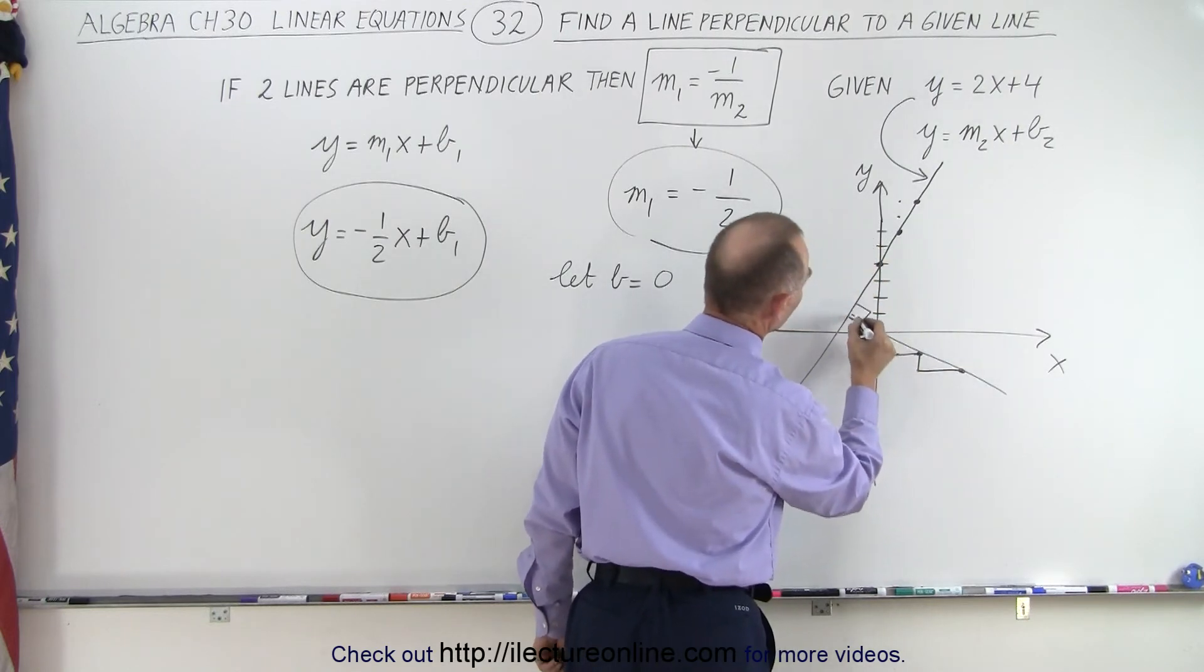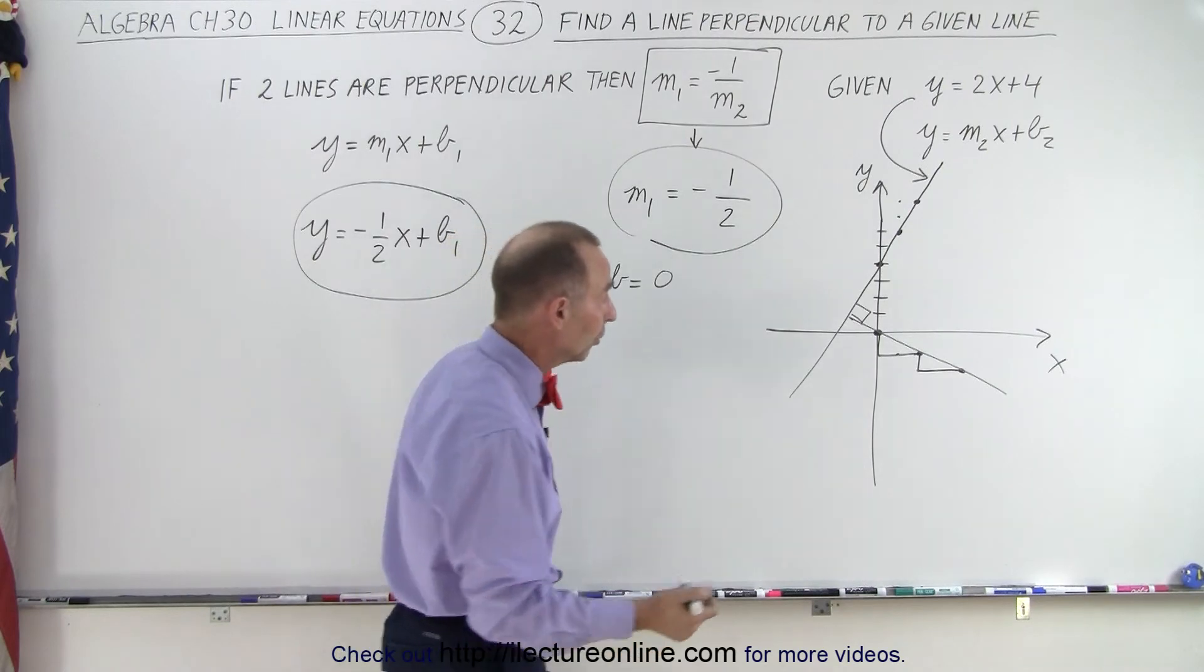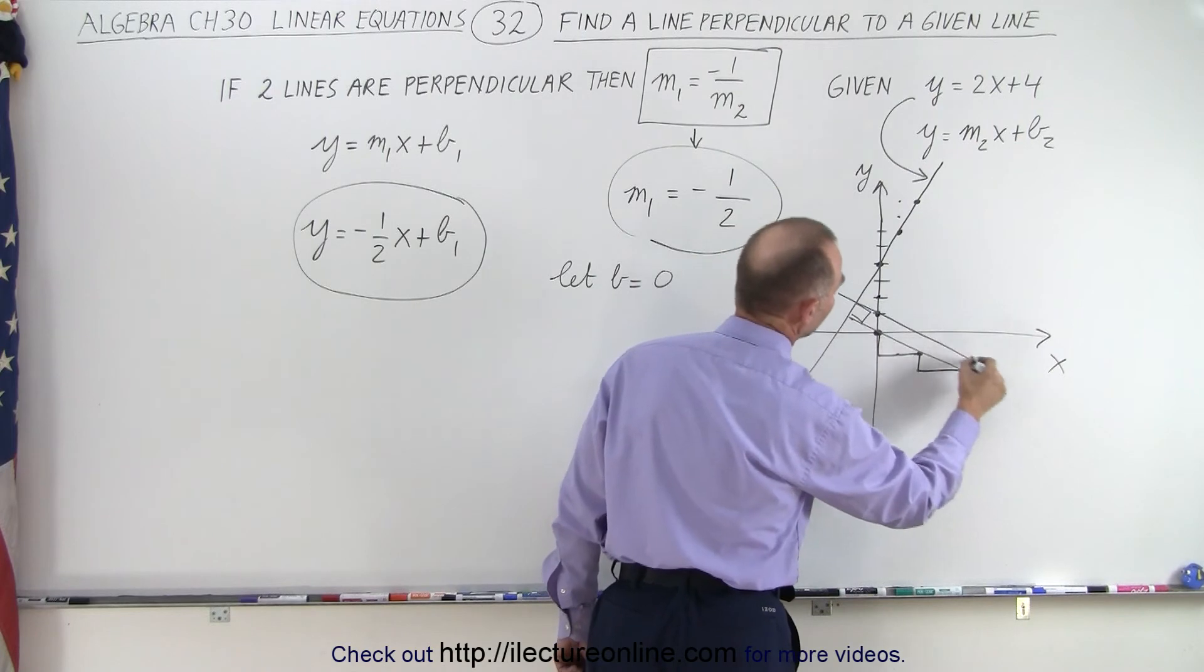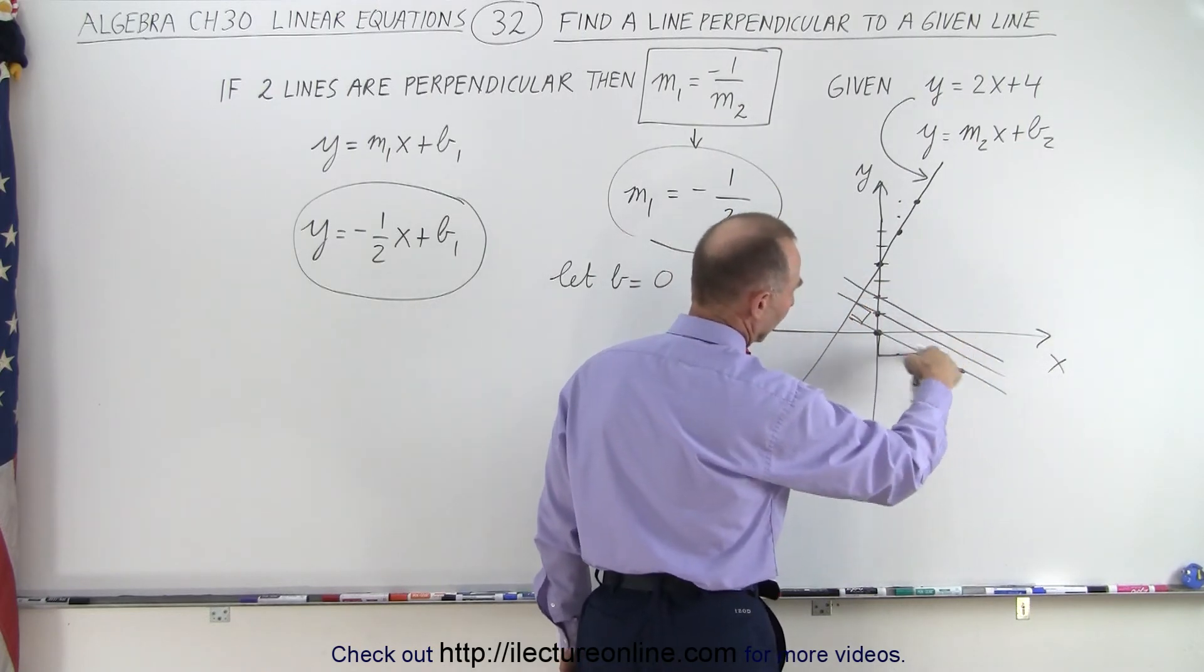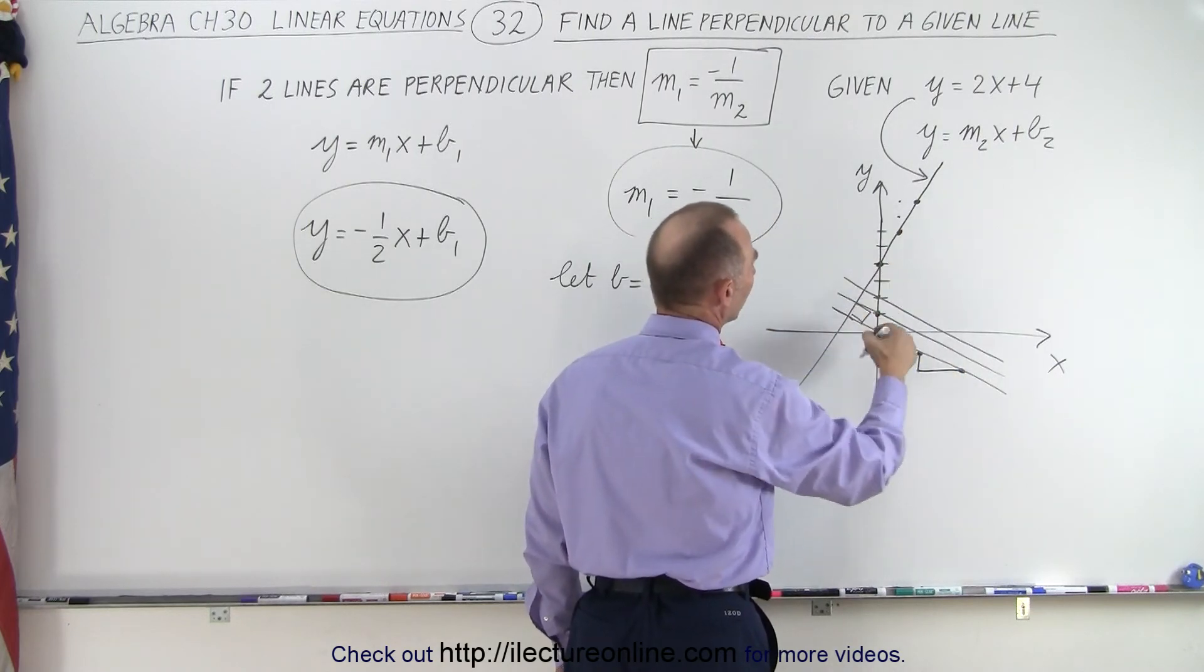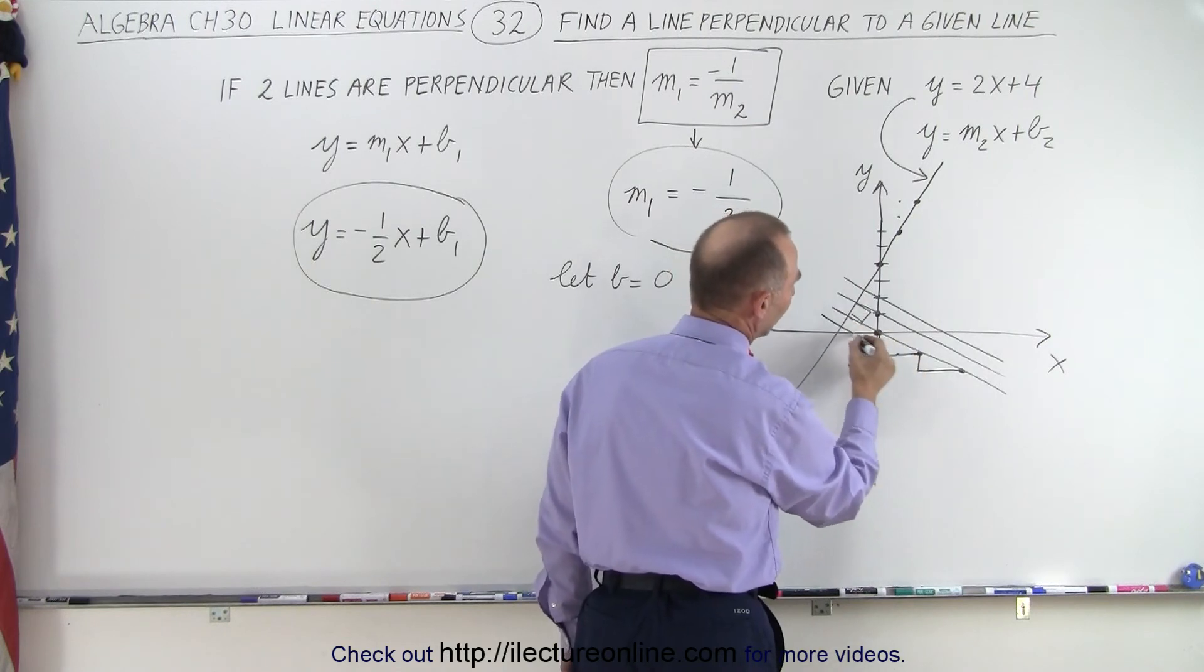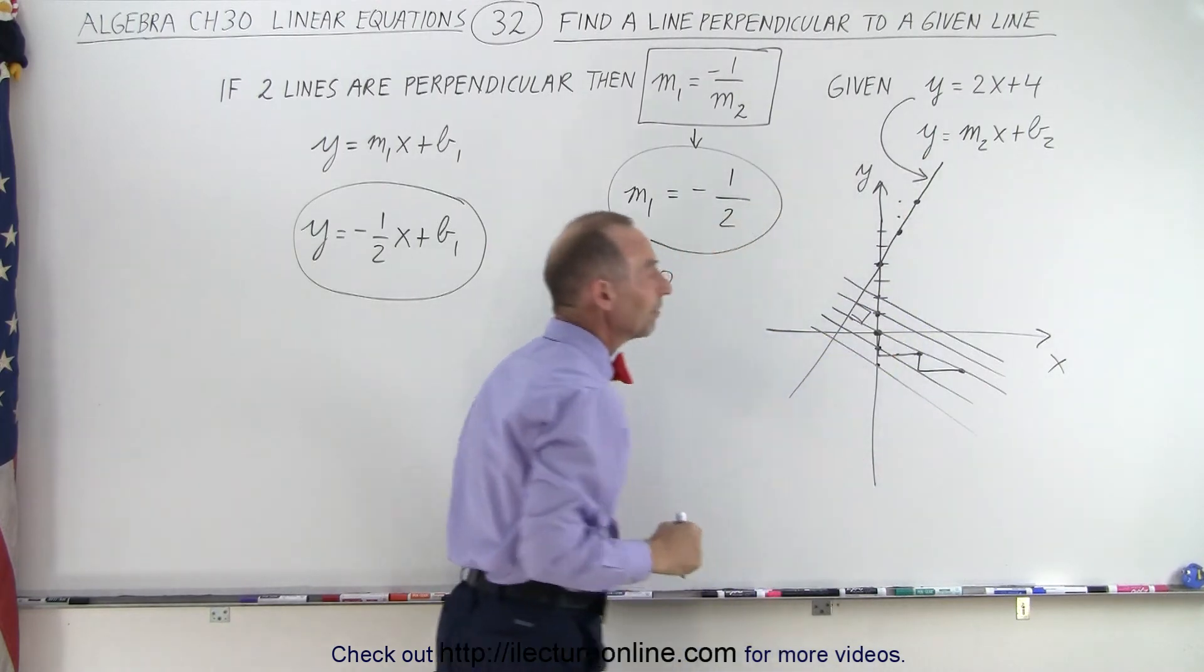But again, we didn't have to pick b equals 0. We can pick b equals 1, we can pick b equals 2, and in each case we'll end up with a line that will be parallel to the line that we found but perpendicular to the other line. So all these lines, regardless of what b that I pick, they will all have the same slope and therefore they will always be perpendicular to the initial line that was given.